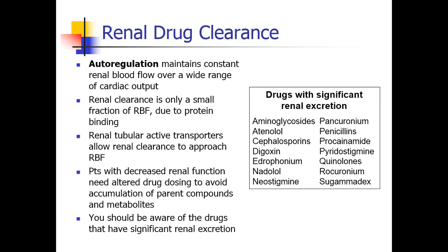The kidney operates very differently from the liver. In the liver, we spoke a lot about hepatic blood flow and how increasing it can increase clearance for some drugs. This is not the case in the kidneys. The kidneys have a phenomenon called autoregulation: regardless of cardiac output, regardless of whether blood pressure is very low or very high, autoregulation means that renal blood flow will remain the same. The arteries going to the kidneys dilate and contract to ensure the kidneys always get the same blood flow, except in extremely high or low conditions.